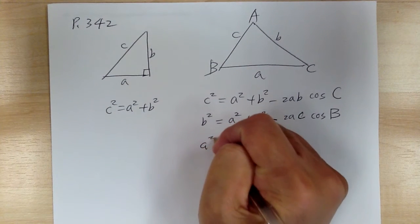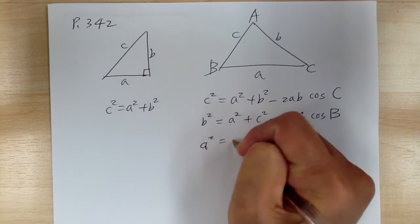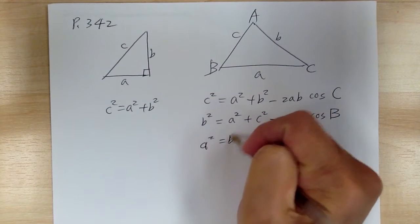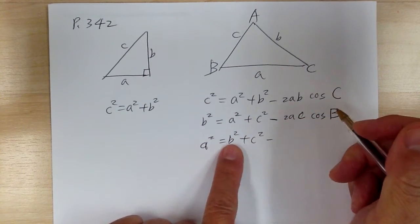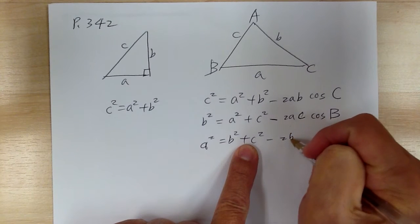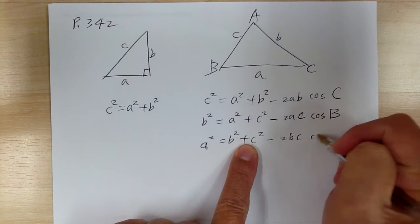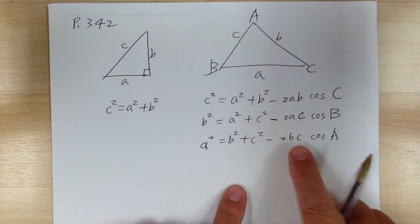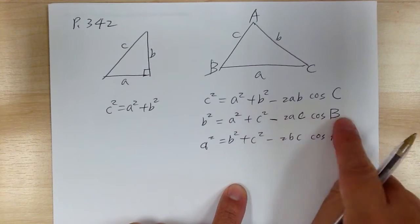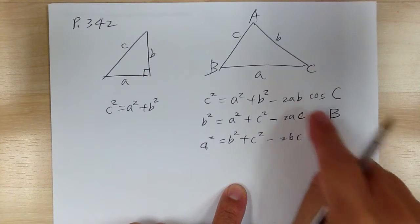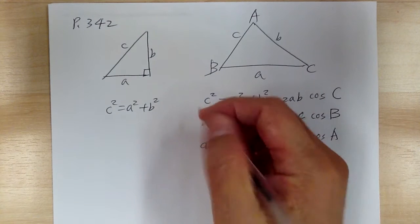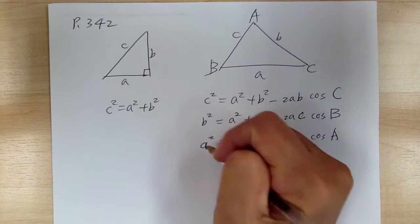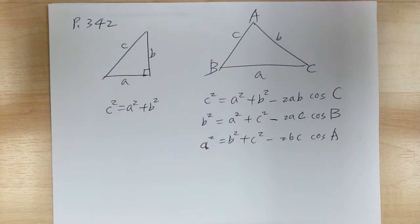So if you start with A squared, you have A already, so you need to get B squared and C squared. And if you have B and C in the middle term, you're going to get B and C there, and you need to get cosine of A. So again, you've got A, B, C on each side — A, B, C, A, B, C. The pattern repeats consistently.